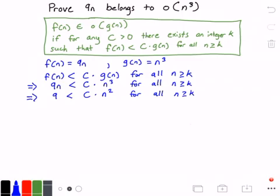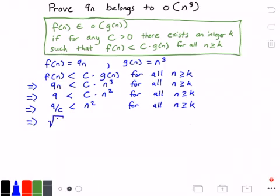Then let's divide both sides by our constant c. We get: 9 divided by c is less than n squared, for all values of n greater than or equal to k. And now let's take the square root of both sides, giving us: the square root of 9 divided by c is less than n, for all values of n greater than or equal to k.